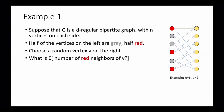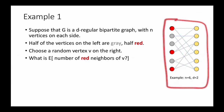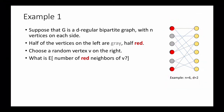Suppose that G is a d-regular bipartite graph with n vertices on each side. There are n vertices on the left side L and on the right side R, and by d-regular I mean that every vertex has degree d. This particular example is 2-regular — every vertex has two edges coming out. Now let's say that half the vertices on the left are gray and half are red. I'm going to consider the following random variable: let's choose a random vertex V on the right, and count how many of its neighbors are red.